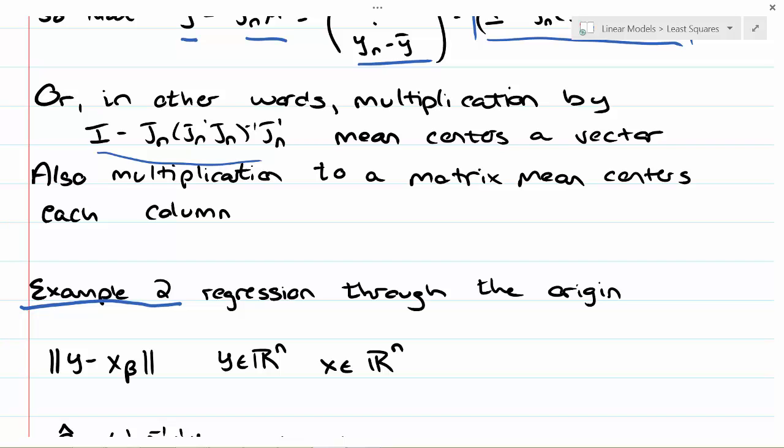Multiplication to a matrix means it's centering the rows or the columns, depending on whether you pre-multiply or post-multiply by this matrix.